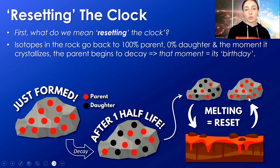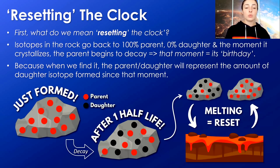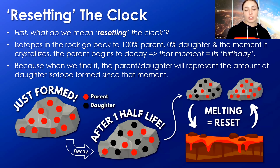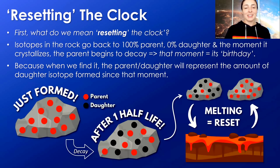That moment of crystallization after the melting is the moment that we date as its birthday. So when we find it, we assume the parent-to-daughter isotope ratio represents the amount of daughter isotope formed since that crystallization. But this is a big assumption to make without backing — so how do we know that this resetting occurs, and what are the underlying mechanisms of such resetting?